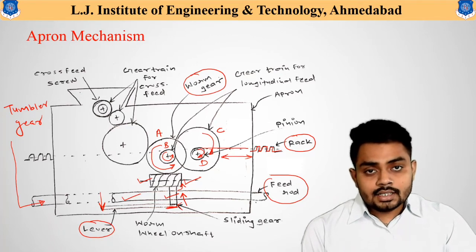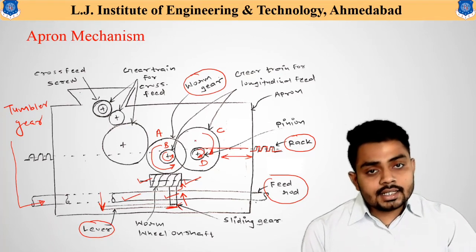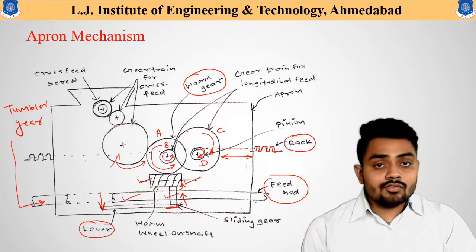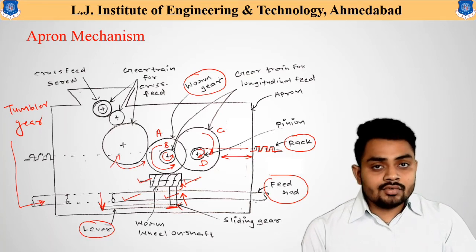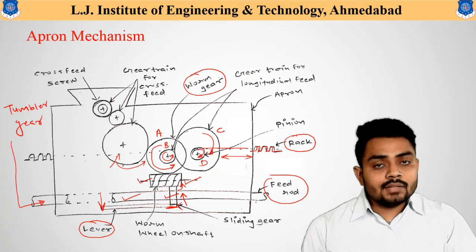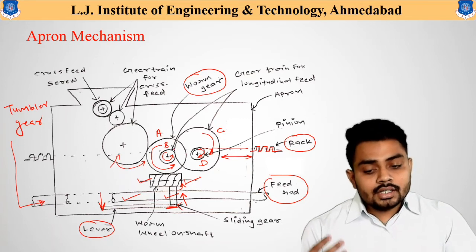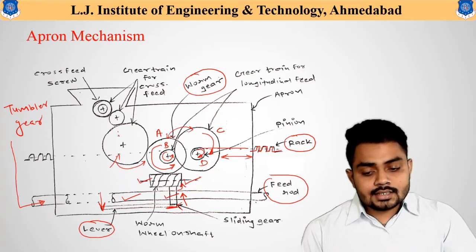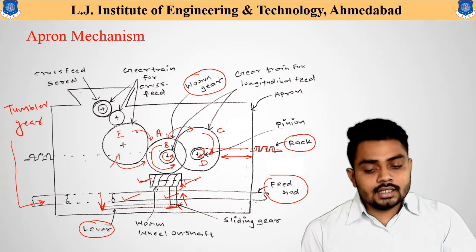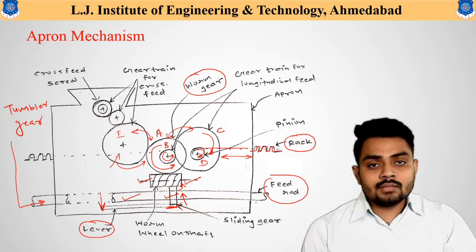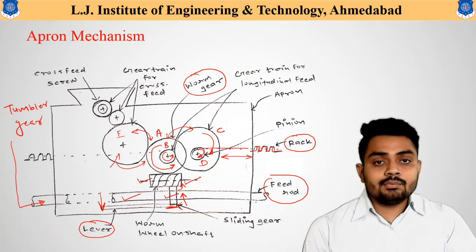When gear C is in the disengaged condition and another gear — let us call it gear E — is engaged with gear A, a different movement is obtained. At any single time, any two specific gears are connected, providing one specific movement. For engagement and disengagement, a specific lever arrangement is provided in the apron mechanism.